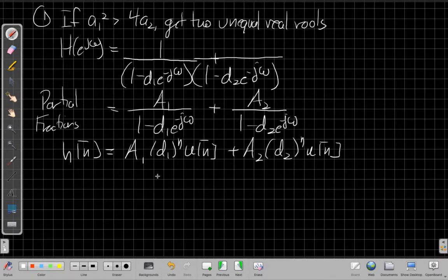Alright, so that's the first case. And in that case, it's just the sum of the two things we've already seen in the previous video for first order just added together. And so we know that how close d1 and d2 are to 1 will determine which one dies off faster.